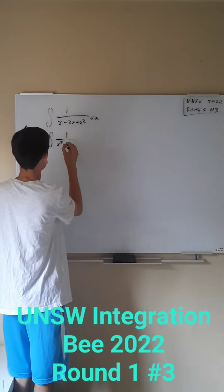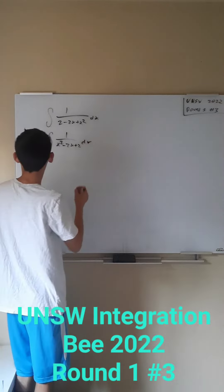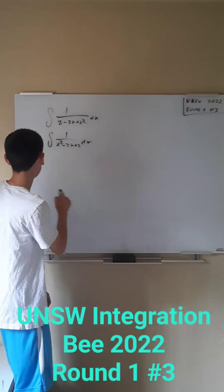So 1 over x squared minus 2x plus 2 dx. What we're going to want to do here is complete the square with the denominator.